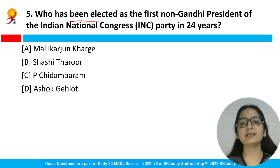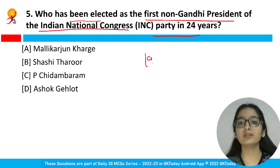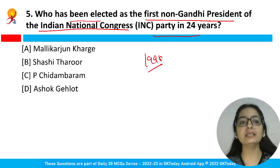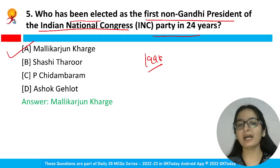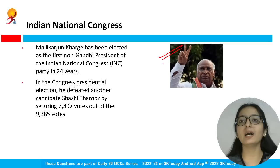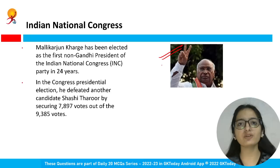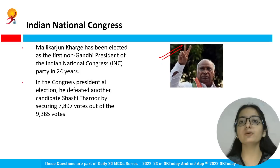Who has been elected as the first non-Gandhi president of the Indian National Congress party in 24 years? After 1998, after 24 years, the party is getting a non-Gandhi president. The answer is Mallikarjun Kharge — option A is correct. This is an election within the party itself, and for the first time in 24 years, the INC president is not from the Gandhi family.